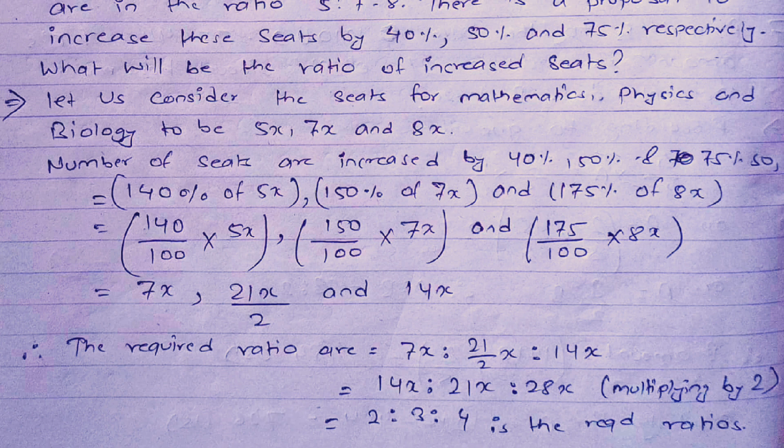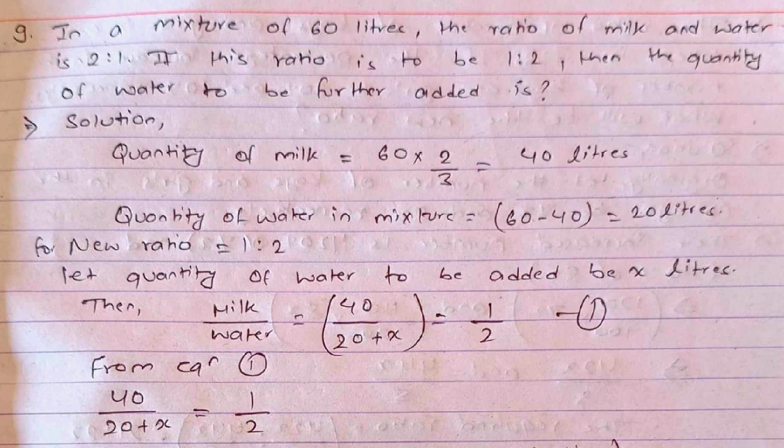Question 9: In a mixture of 60 liters, the ratio of milk and water is 2 : 1. If the ratio is to be changed to 1 : 2, what quantity of water needs to be added? The quantity of milk = 60 × (2/3) = 40 liters. The quantity of water = 60 − 40 = 20 liters. For the new ratio of 1 : 2, we let the quantity of water to be added be x.